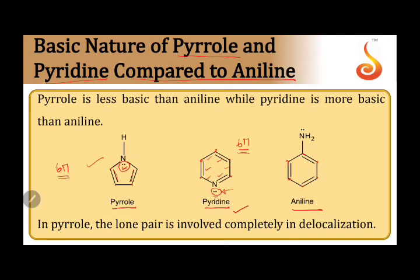Because pyridine's lone pair is not required for aromatic character or conjugation, pyridine is in a very good position to donate its electron pair easily. Aniline's lone pair is in conjugation with the benzene ring but is not required for its aromatic character. Therefore, the basicity order is: pyrrole is the least basic, aniline is more basic than pyrrole, and pyridine is the most basic of all, as it can most easily donate its electron pair.